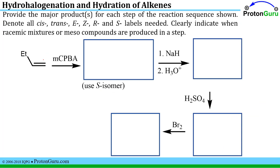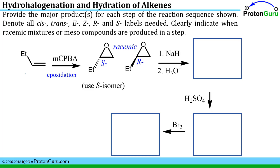Here's a reaction string where we're asked to fill in the major product for each step, including cis/trans, E/Z, and R/S labels, and to indicate racemic mixtures or meso compounds. The first step uses meta-chloroperoxybenzoic acid — that's an epoxidation. On scratch paper we note it makes a stereocenter, giving a racemic mixture of R and S. The instructions tell us to use the S isomer for the next step.